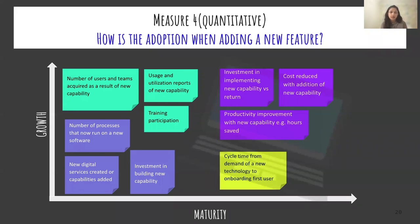Now it is time to measure how successful those actions were. During the growth phase, you look at the number of capabilities added and the number of processes running on the new software. Further up in growth, you focus on adoption to new capabilities — number of users using the new capability, utilization trends, users added as a result, and people who participated in training. During maturity, you look at cycle time for onboarding users, and investment versus results like cost reduced and productivity improvements such as hours saved.